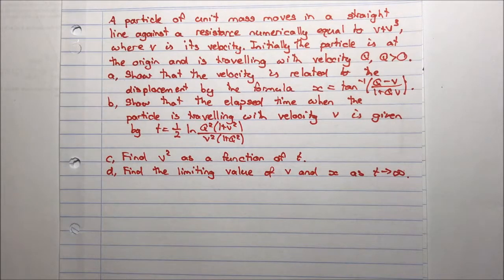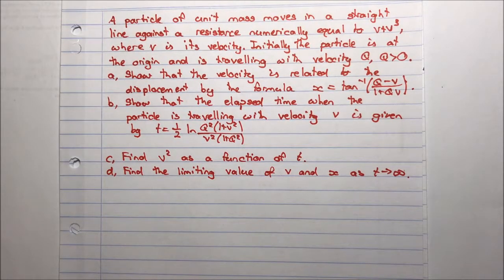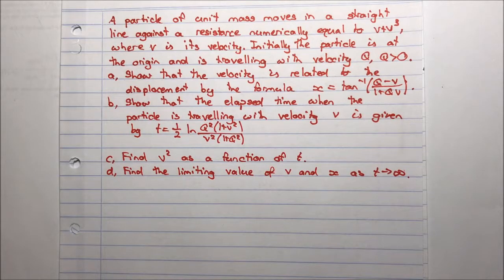Part A: show that the velocity is related to the displacement by the formula x equals the inverse tan of (q minus v) over (1 plus qv). Part B: show that the elapsed time when the particle is travelling with velocity v is given by t equals one half log of q squared times (1 plus v squared) over v squared times (1 plus q squared). Part C: find v squared as a function of t. Part D: find the limiting value of v and x as t approaches infinity.